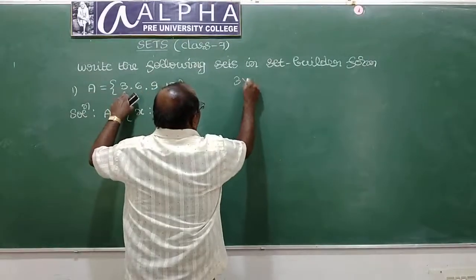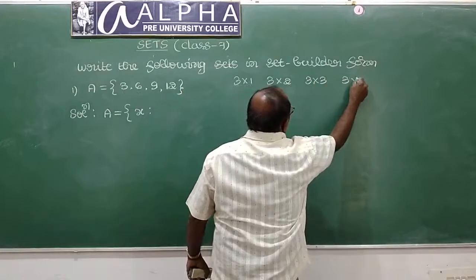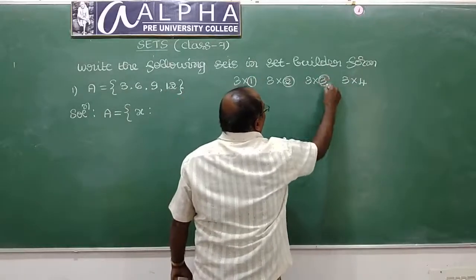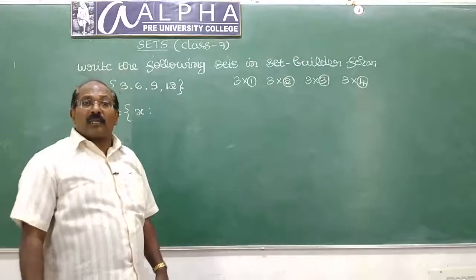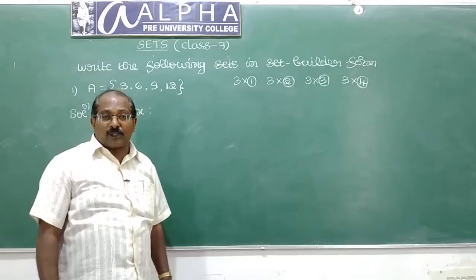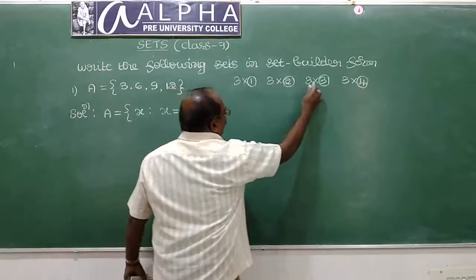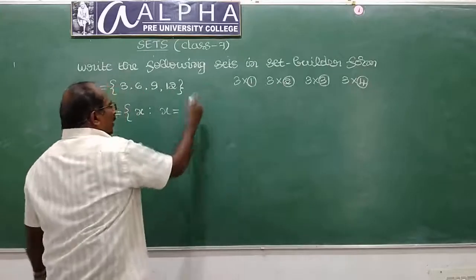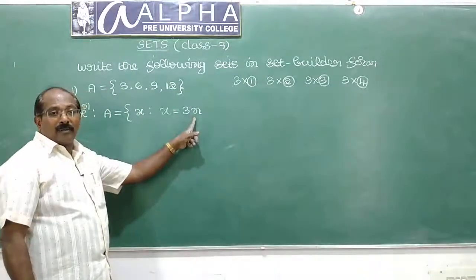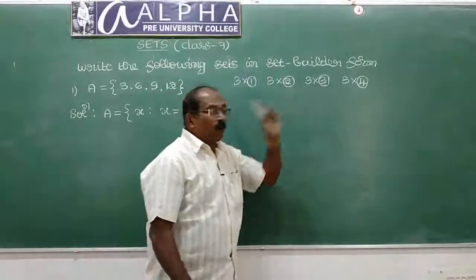3 is 3 into 1, 6 is 3 into 2, 9 is 3 into 3, 12 is 3 into 4. So every element is 3n, where n takes values 1, 2, 3, 4 — the first four natural numbers.